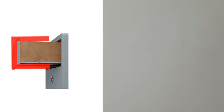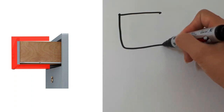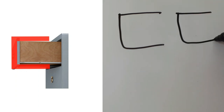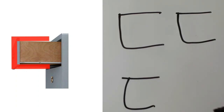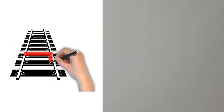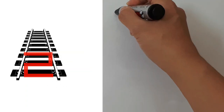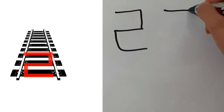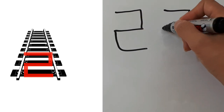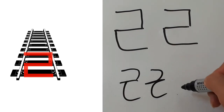ㄷ — two strokes: one, two. Some people write it like this. ㄹ — three strokes: one, two, three. Some people write it like this, it's alright.